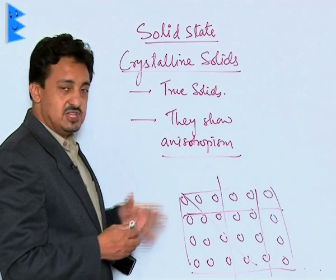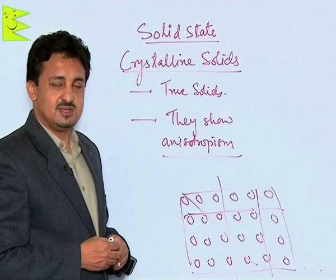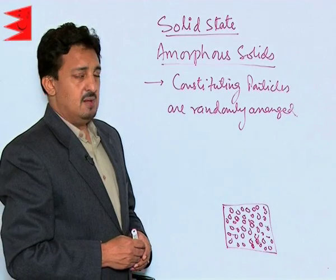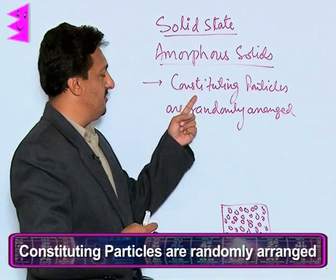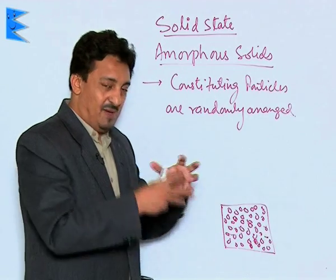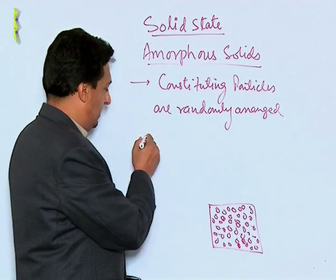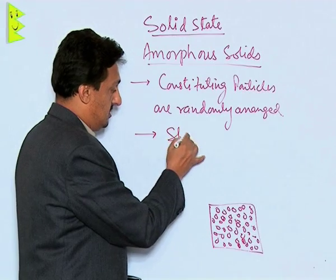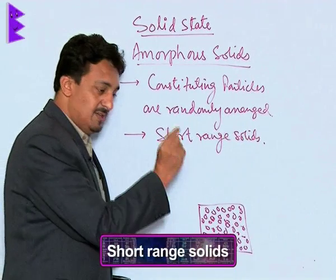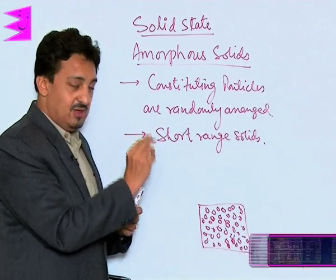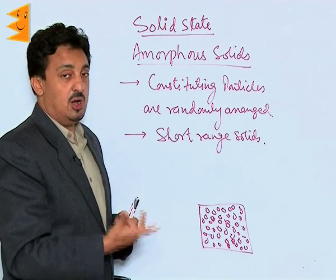Those are the major properties of crystalline solids. Now let us look at amorphous solids. Amorphous solids are solids in which the constituting particles are randomly packed or arranged — just packed without any fixed pattern. That is why they are also called short-range solids, because whatever pattern the particles can form lasts for only a very short distance and is not repeated for long distances.